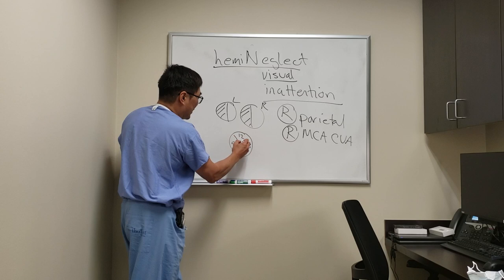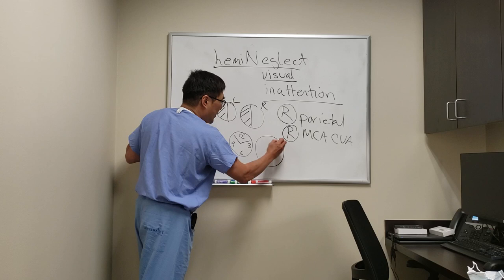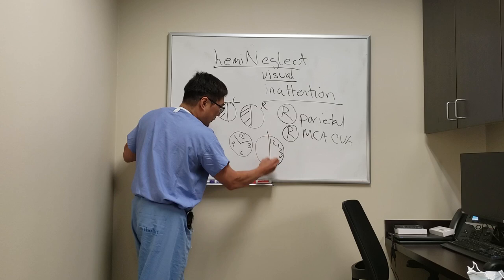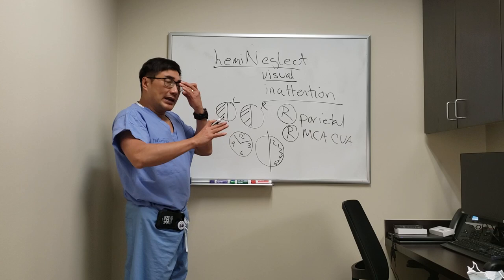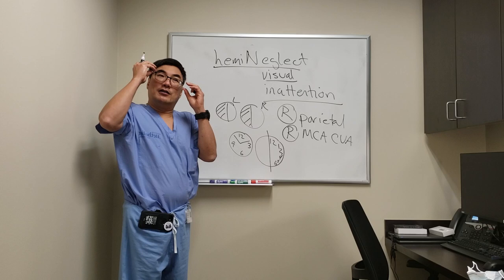One of the things we do is have them draw a clock. A normal clock has a twelve, three, six, and nine. If you say make the time five to two, you'll get a normal clock. Even a homonymous hemianopsia person is going to draw a normal clock because they know what a clock looks like. But a patient who has neglect might bunch everything all up on one side and basically won't put anything on the other side.